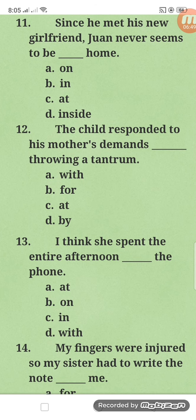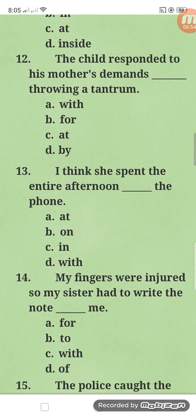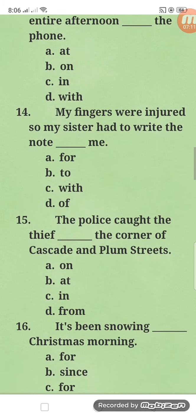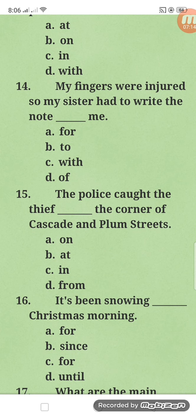Number twelve: the child responded to his mother's demands by throwing a tantrum. Number thirteen: I think she spent the entire afternoon on the phone — the expression 'on the phone' uses 'on.' Number fourteen: my fingers were injured, so my sister had to write the note for me — letter A. When asking someone to do something for you, you always use 'for': for me, for him, for her.